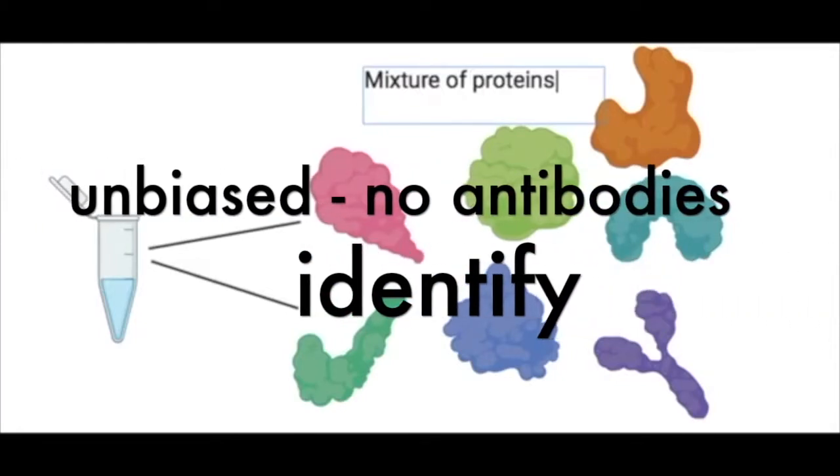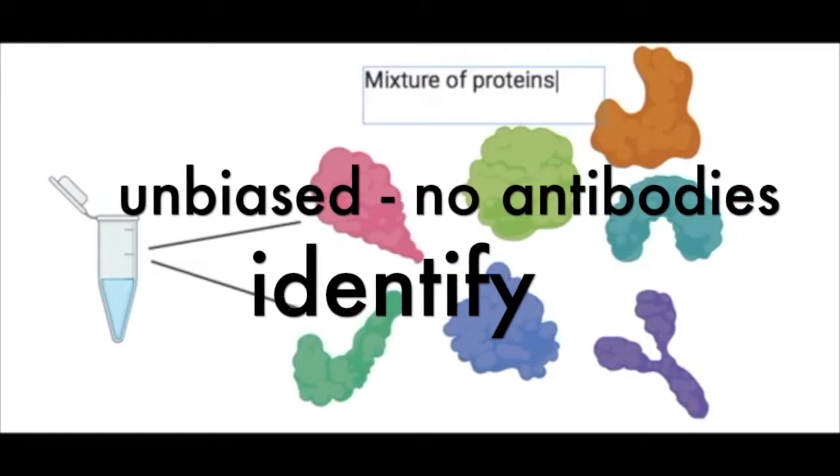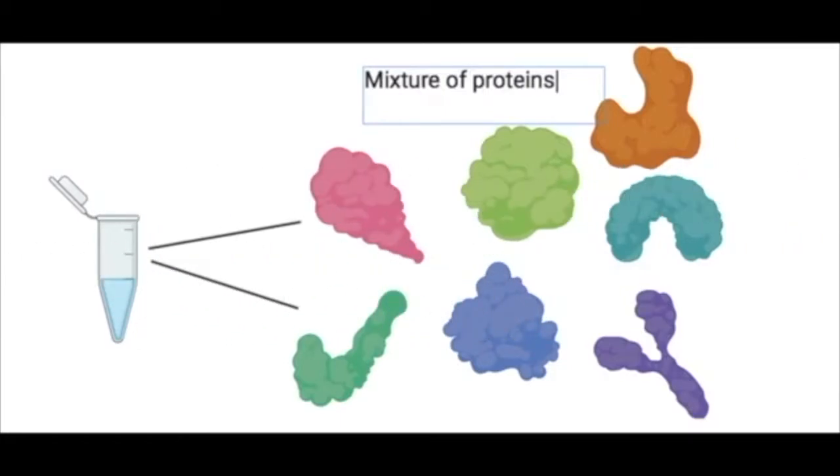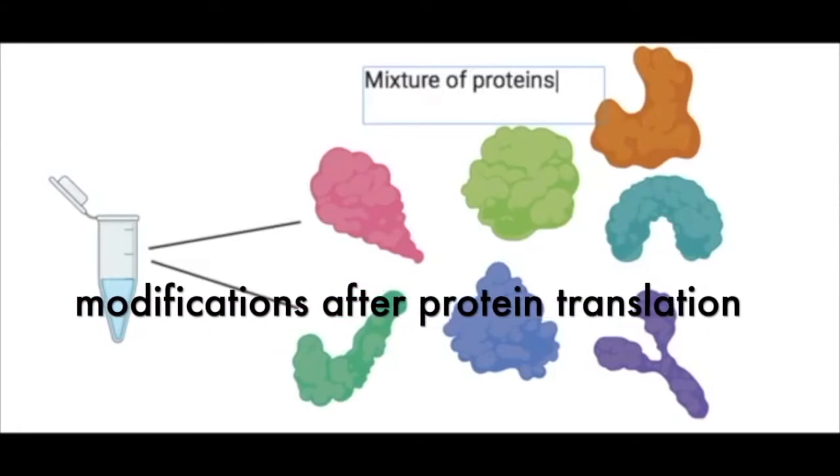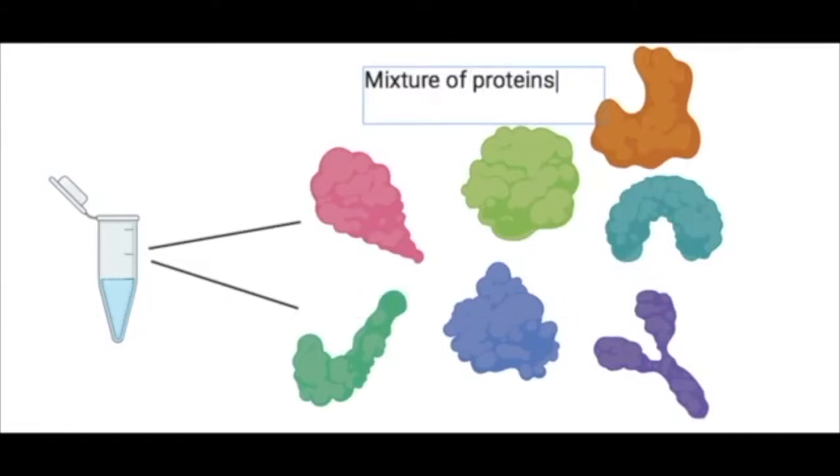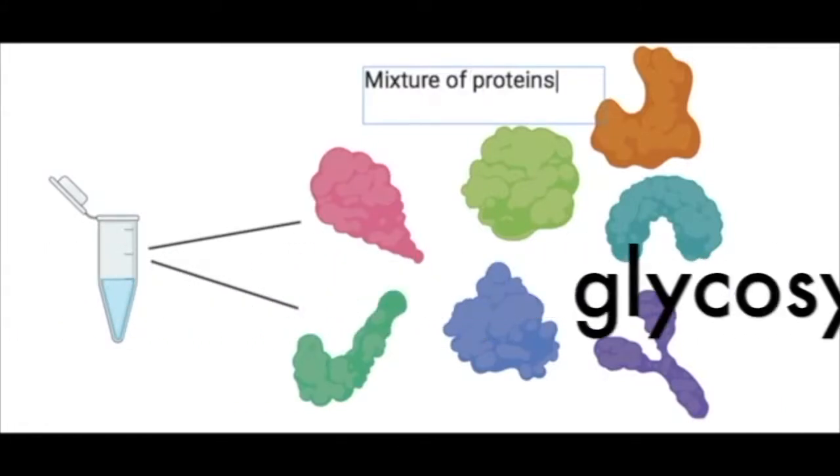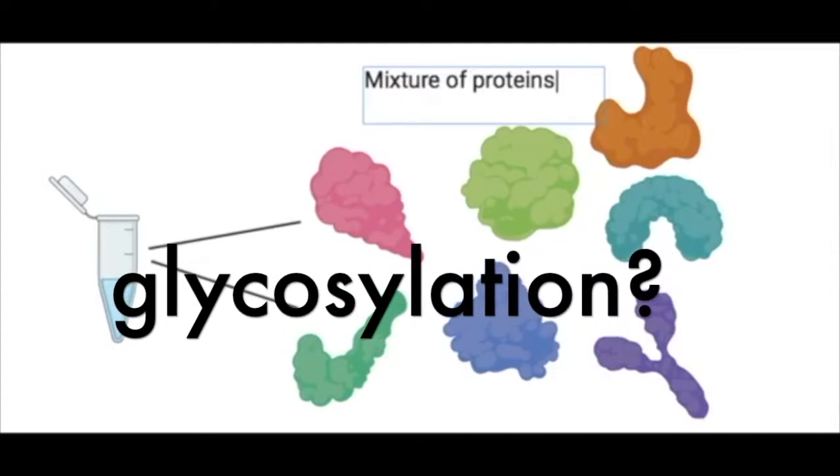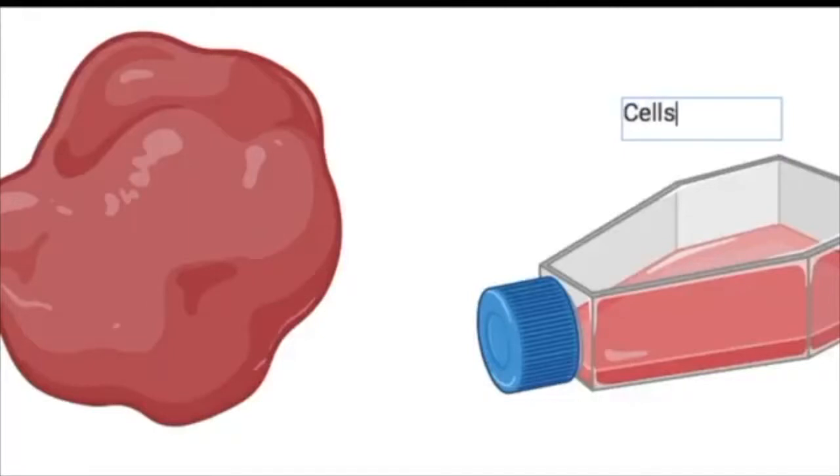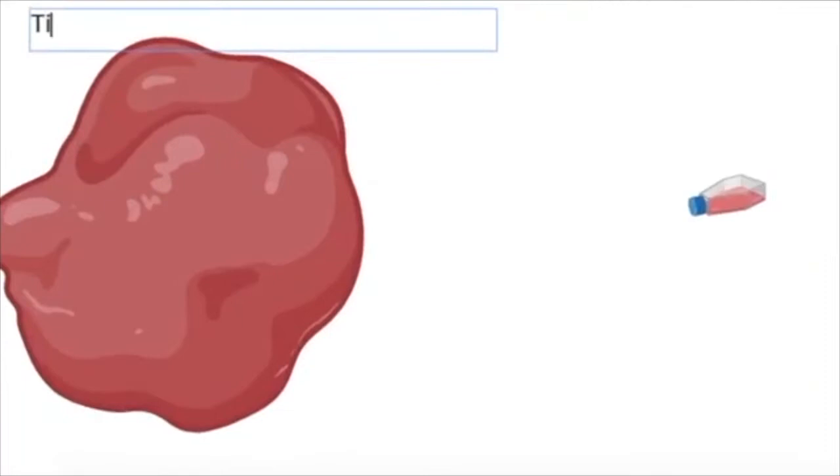With this technique, you're able to identify proteins, quantify proteins, and characterize them. You can look at post-translational modifications that the protein may have, such as phosphorylation or glycosylation. To identify the proteins, you first have to extract them. You can extract them from cells you're culturing or from tissue which has the cells expressing the proteins you want to characterize, quantify, or identify.